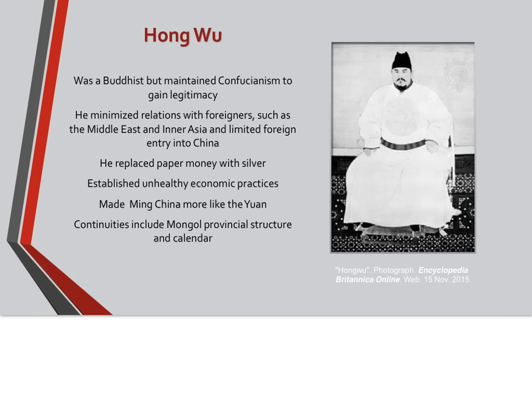Let's start by talking about Hongwu, who established the Ming dynasty. He was a Buddhist, but maintained Confucian practices in order to gain legitimacy. He was very wary of foreigners, especially those from the Middle East and inner Asia, and he limited foreign entry into China. He replaced paper money with silver. He established unhealthy economic practices of isolation. He made Ming China more like the Yuan, but some continuities include the Mongol provincial structure as well as the calendar.